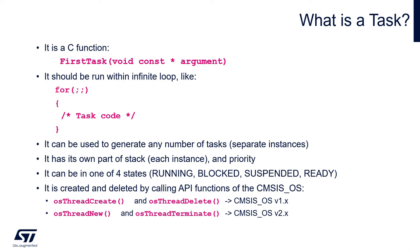Blocked, suspended, and ready states are grouped into so-called lists, which are used by the scheduler to select the task to be executed and to manipulate the rest of the tasks and switch between modes. The task is created and deleted by calling dedicated API functions. Within CMSIS-OS we have either osThreadCreate in CMSIS-OS v1, or osThreadNew in CMSIS-OS v2, which we are using in this training. To delete a task in CMSIS-OS v2 we use osThreadTerminate.